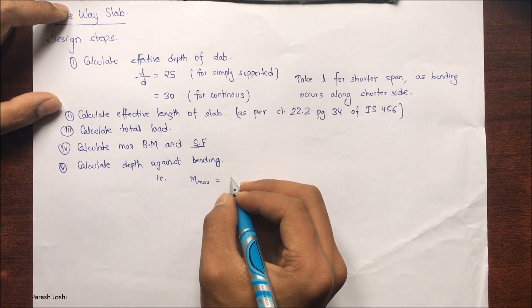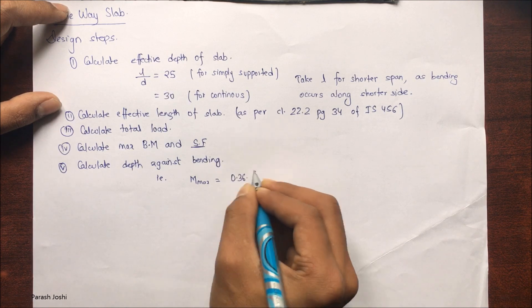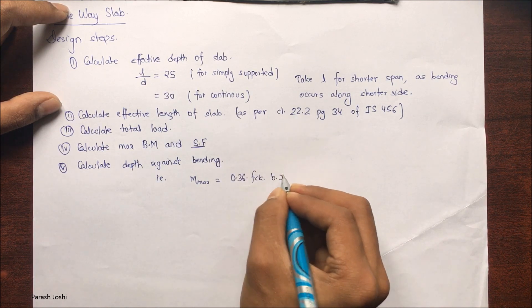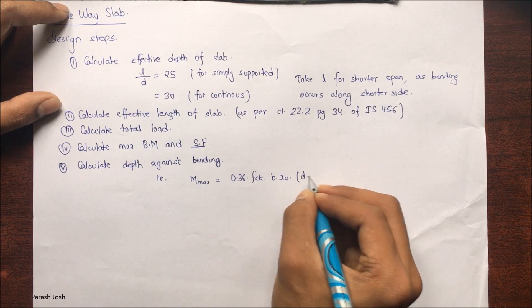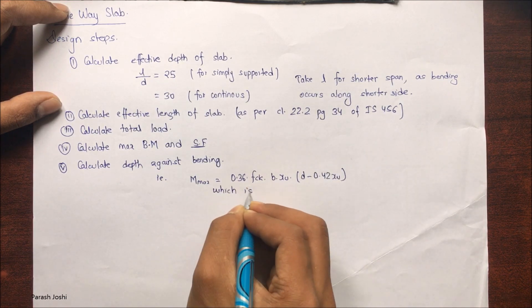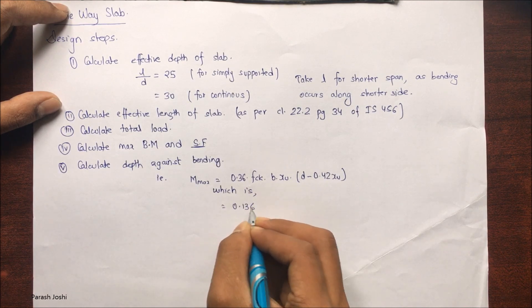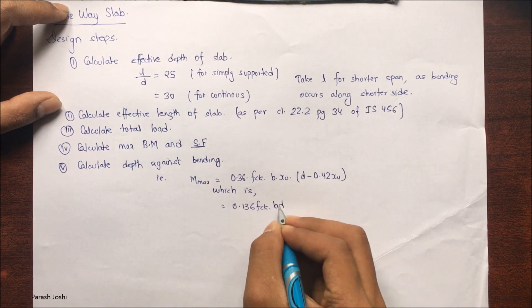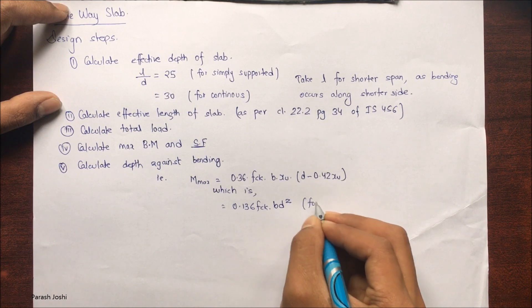0.36 fck B into Xu, that is limiting neutral axis depth, times D minus 0.42 Xu, which is taken as 0.136 fck B D squared for the steel grade of FE 415. For 500 it will be 0.133.